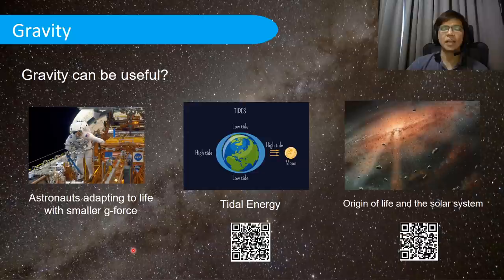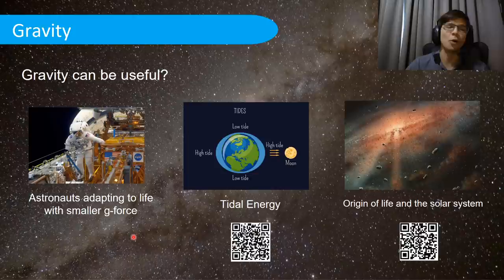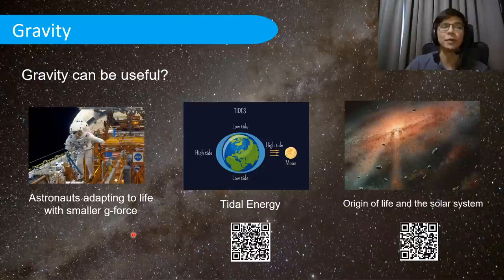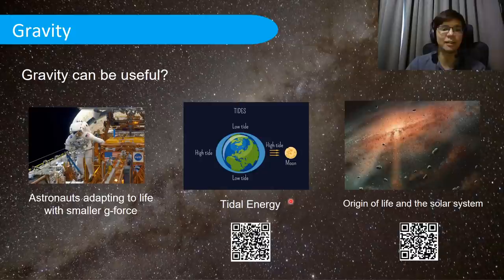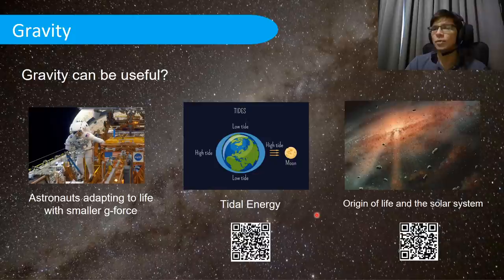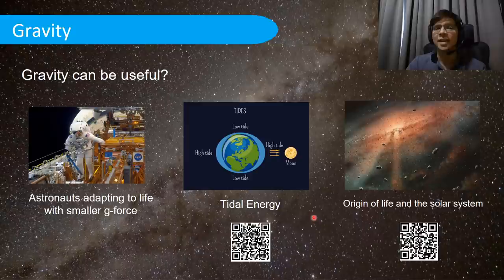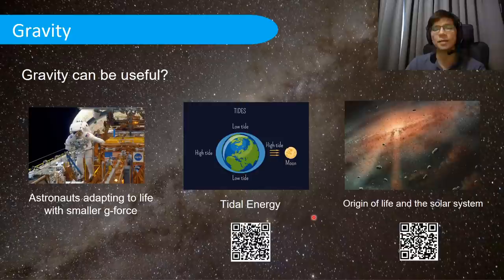Gravity can also be very useful. If you've ever watched an astronaut do a space walk outside the International Space Station, you realize how troublesome it is to move without gravity. Our bodies are accustomed to Earth's gravitational field — bones become more brittle under weightlessness. Gravity is also responsible for high and low tides through the gravitational attraction between the Moon and Earth's water bodies, which can be applied to produce tidal energy. Most importantly, our solar system formed from a solar nebula where dust and gas accumulated into the Sun and the eight planets of our solar system — gravity assembled everything.